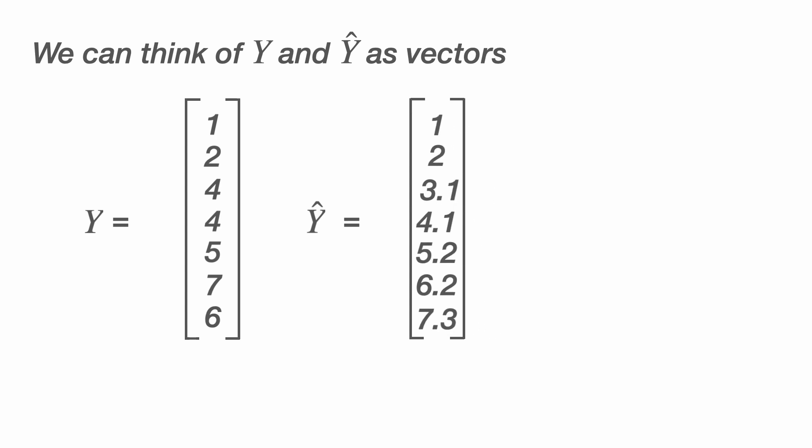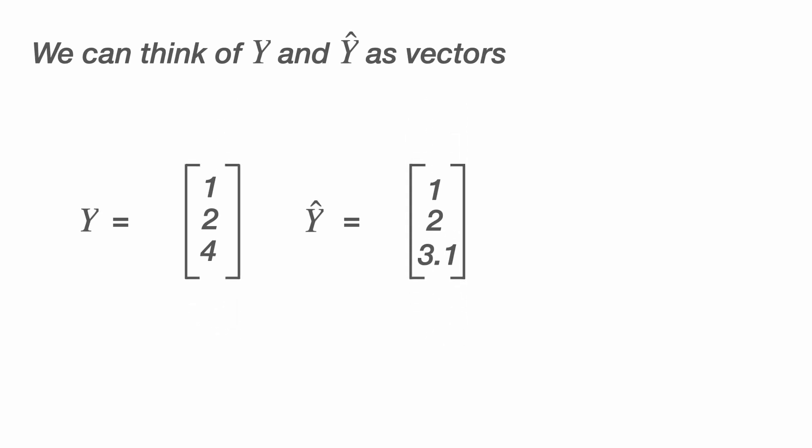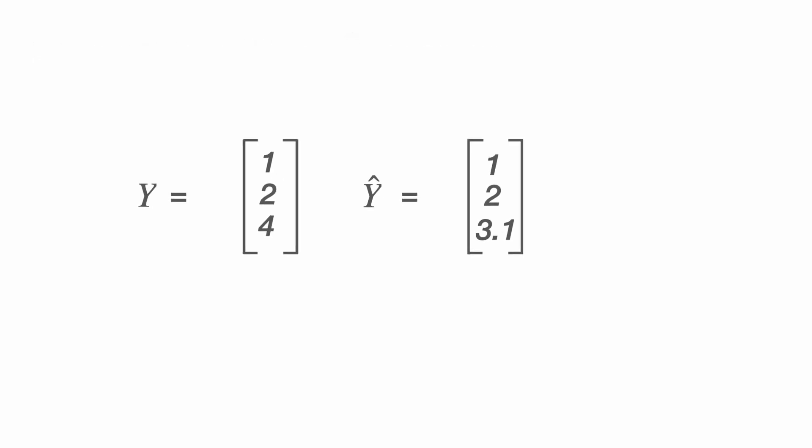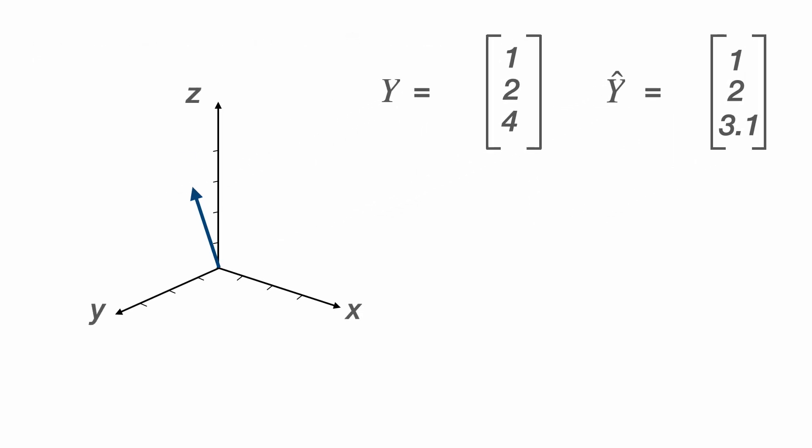But we can't visualize a vector in seven-dimensional space, so I'm just going to take the first three elements of each of these vectors, and we're going to visualize them in a three-dimensional space. So there we have Y, and here we have Y hat. Y, because it's coming from experimental data, those numbers could be anything, and therefore Y could theoretically be anywhere within this three-dimensional space. Y hat, however, is constrained because that's related to the predictions from a line of best fit, and changing that line of best fit will change Y hat.